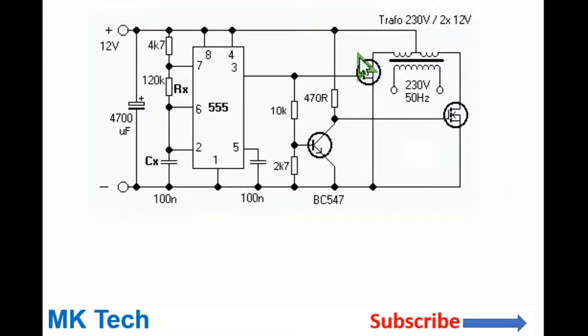So this is a push-pull inverter circuit. If you use the IRF3205 MOSFET which can handle up to 98 amperes comfortably, it means that you can output 500 watts without a problem.